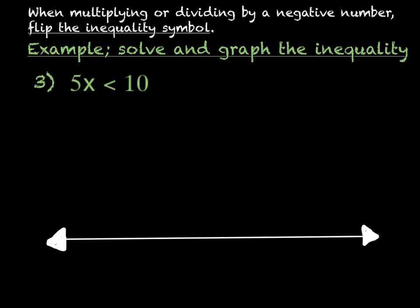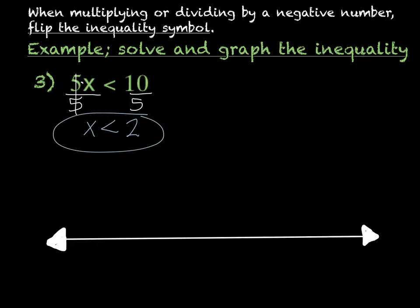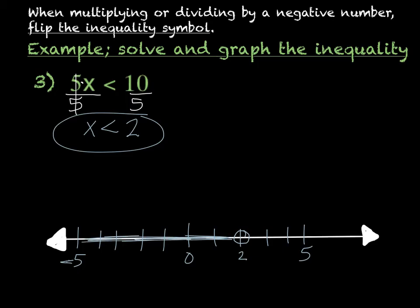For this next one, we have 5x is less than 10. This means 5 times x. To get rid of multiplication, you divide by that same number, so I divide both sides by 5. Since it's not a negative number, I don't have to flip the inequality. So x is less than 10 divided by 5, which is 2. On the graph, it's less than 2, so I put an open circle on 2 and shade anything less than that.